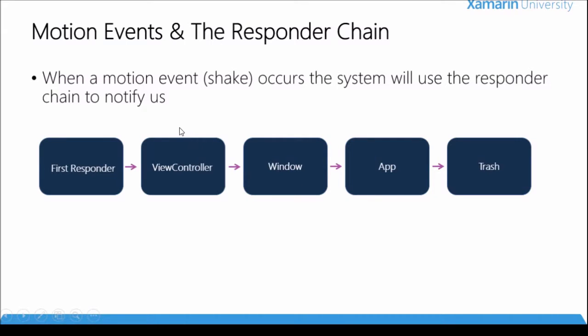The next thing in the chain is the view controller. If the view controller does not listen to it, it will get forwarded to the window. If the window does not listen to it, it will get forwarded to the app. If the app does not listen to it, it will get thrown into the trash — basically discarded as if the event never happened.